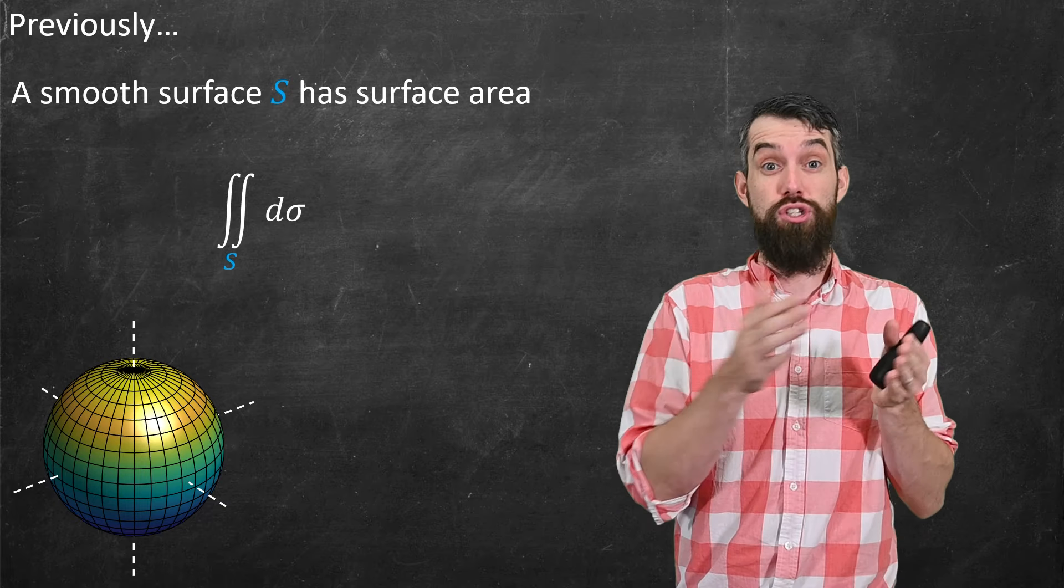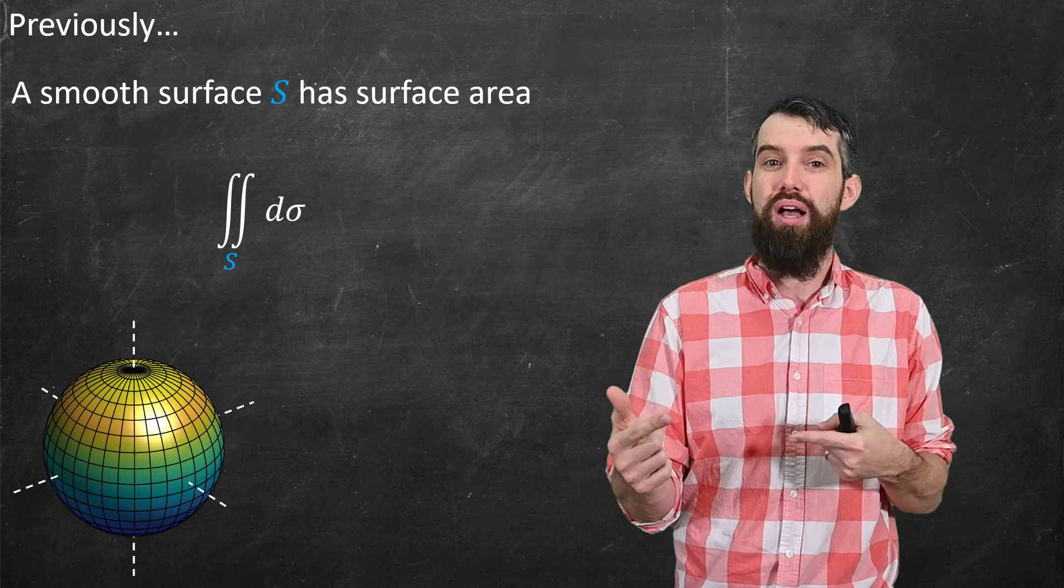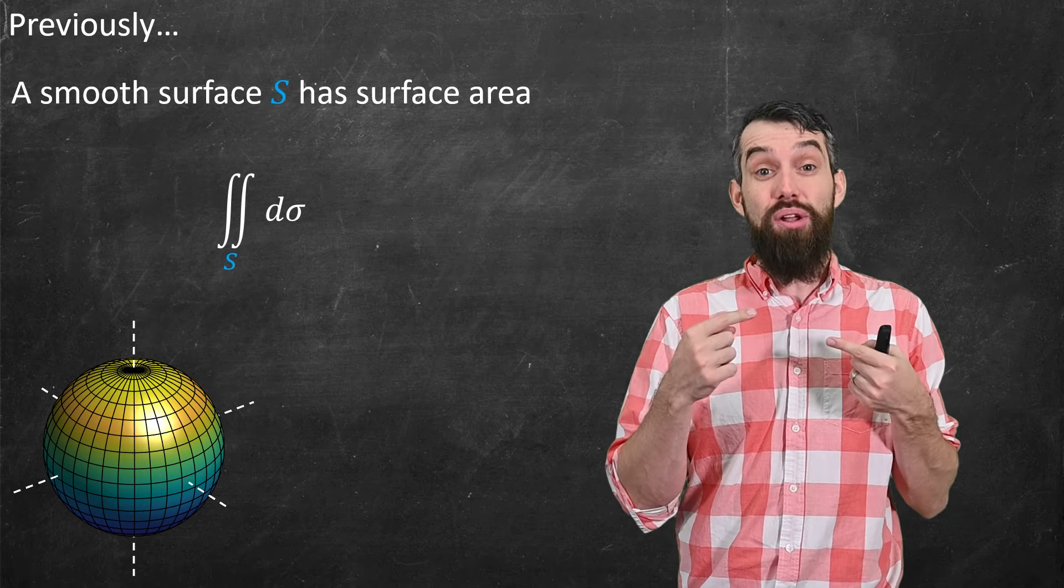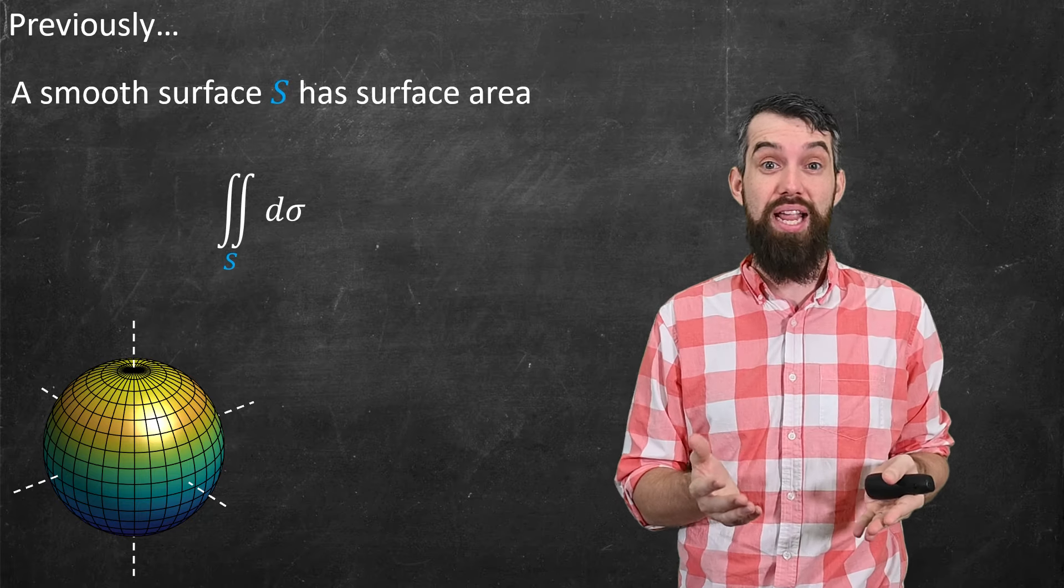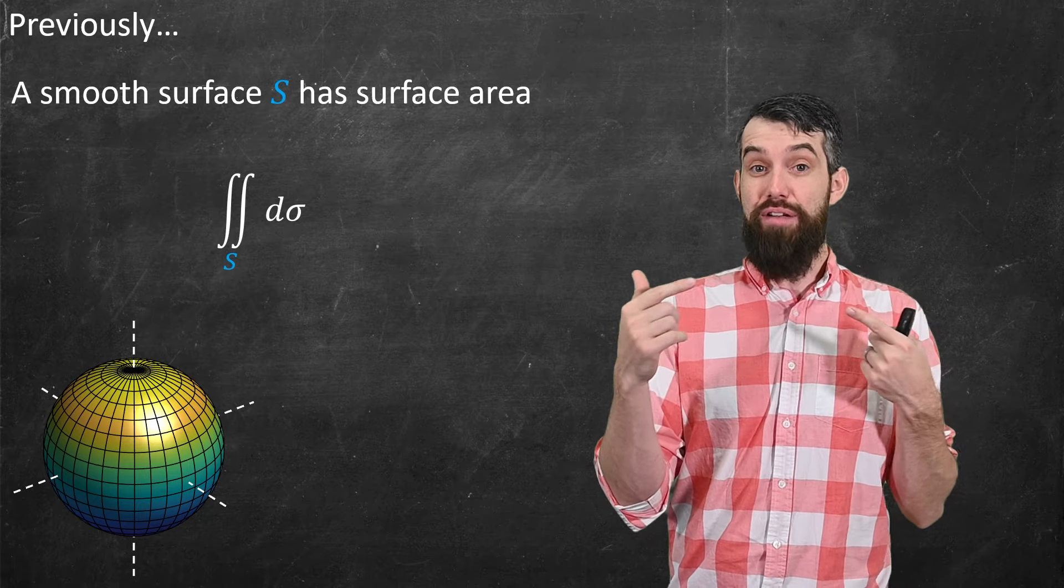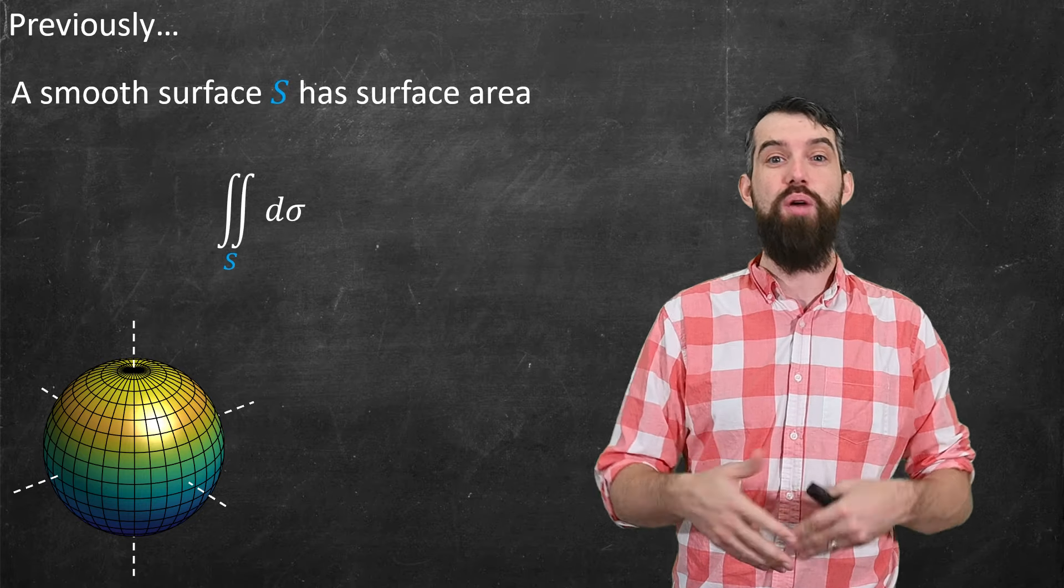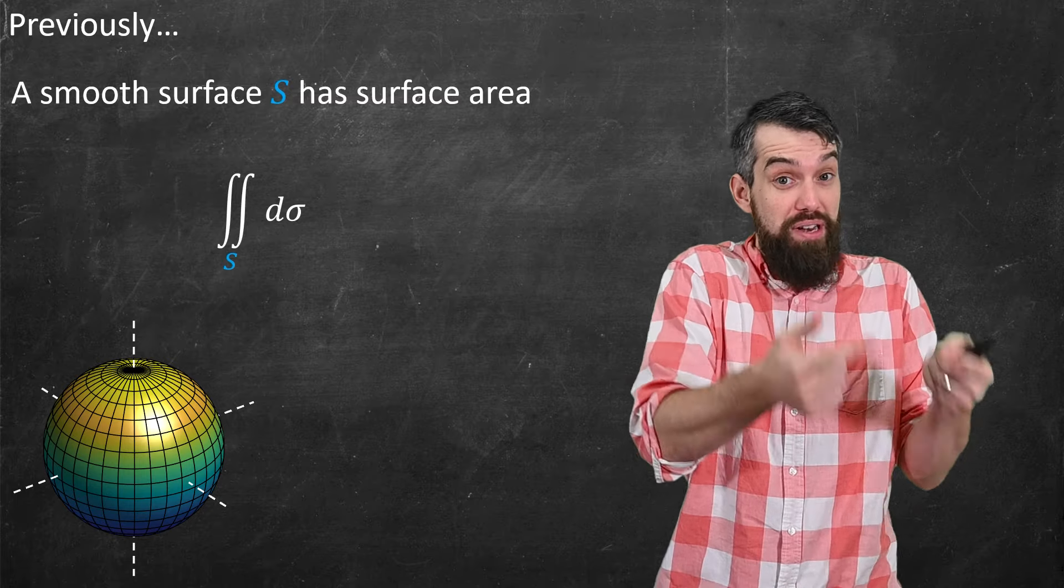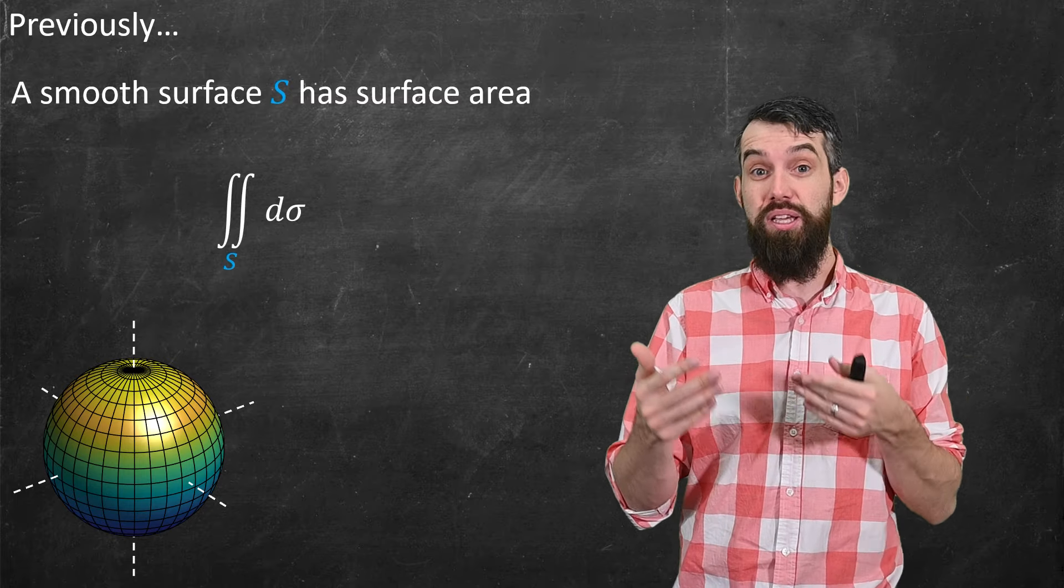Now, the generic notation I'll use for just surface area is the double integral over a surface d sigma. d sigma here is thought of as a little element of surface area. So I'm just saying add up all the little elements of surface area. This is a great definition, and it's much like how previously we would often talk about the arc length parameter ds, which was great for definitions, but wasn't how we typically computed things.